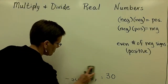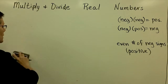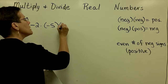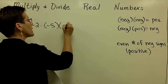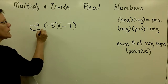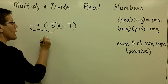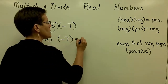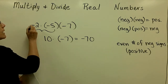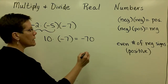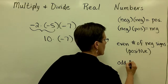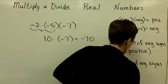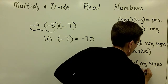In contrast, notice that if I had an odd number of negative signs — negative 2 times negative 5 times negative 7 — working from left to right, a negative times a negative is a positive 10. Then positive 10 times a negative 7 is a negative 70. I can see that with 1, 2, 3 negative signs — an odd number of negative signs — I will get a negative answer.